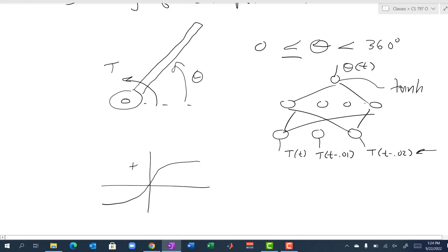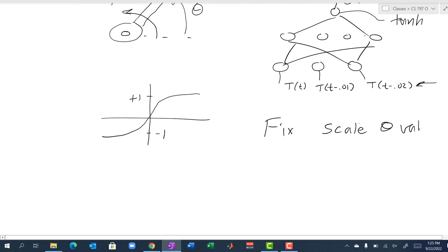Tanh can only output values between plus and minus one, but yet we want this neuron to output a theta value somewhere between zero and 360 degrees. Obviously that does not work. So a fix for that is to scale theta values to be between minus one and one. We scale theta, the output data, so that it's not between zero and 360, we divide so it's scaled between minus one and one.